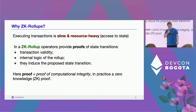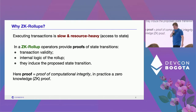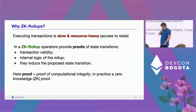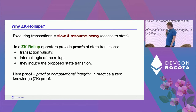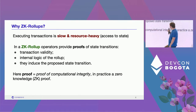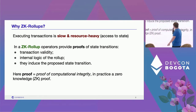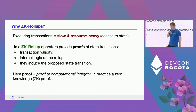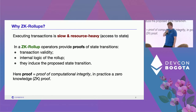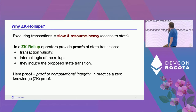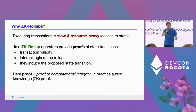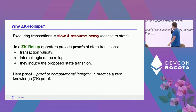First of all, why ZK rollups? In terms of scaling Ethereum, one of the bottlenecks addressed by a ZK rollup is that of the state. In order to validate a state transition, you need to basically execute the transactions within a block. The state is a big object, and this validation is a resource-intensive operation.